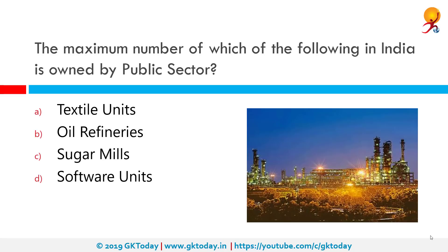The maximum number of which of the following in India is owned by the public sector? The correct answer is oil refineries. India has 18 public sector refineries and five refineries in the private sector or as a joint venture. The largest refineries being Reliance Industries Jamnagar, RPL Jamnagar, MRPL Mangalore, CPCL Manali and IOC Koyali.